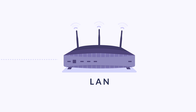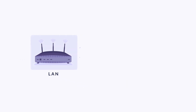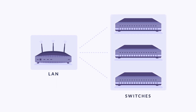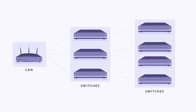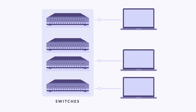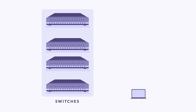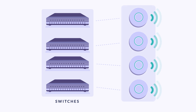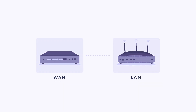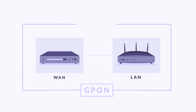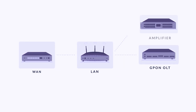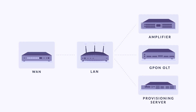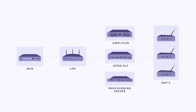In turn, this local router distributes the internet through multiple devices known as switches, that are distributed across the property to provide the connection. Our guests can connect directly by cable to these devices, but to be able to access wirelessly, we need to broadcast the signal via antennas or access points. If we also want to incorporate GPON technology, which allows high-speed internet to be distributed through fiber optic networks and reach more remote areas of the hotel, we need to incorporate OLTs, amplifiers, provisioning servers and ONTs that function as access points.